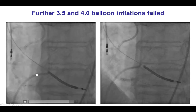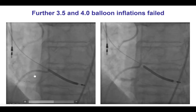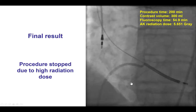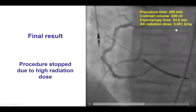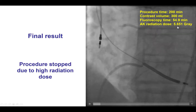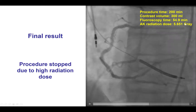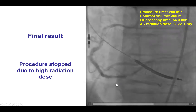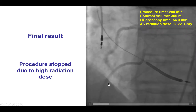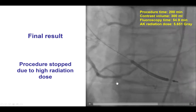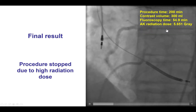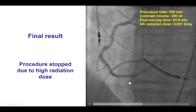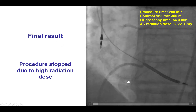The good news was that at least the equipment was removed. We did some additional attempts to dilate the lesion with high-pressure balloon inflations. But at this point, we had reached 5.6 gray of radiation and had been in the lab for more than three hours. The patient did have TIMI 3 flow in the distal vessel. Although we could have done things like laser with or without contrast, we decided to stop the procedure at this point for safety reasons — to prevent radiation skin injury — and potentially bring the patient back for a repeat attempt in the future.